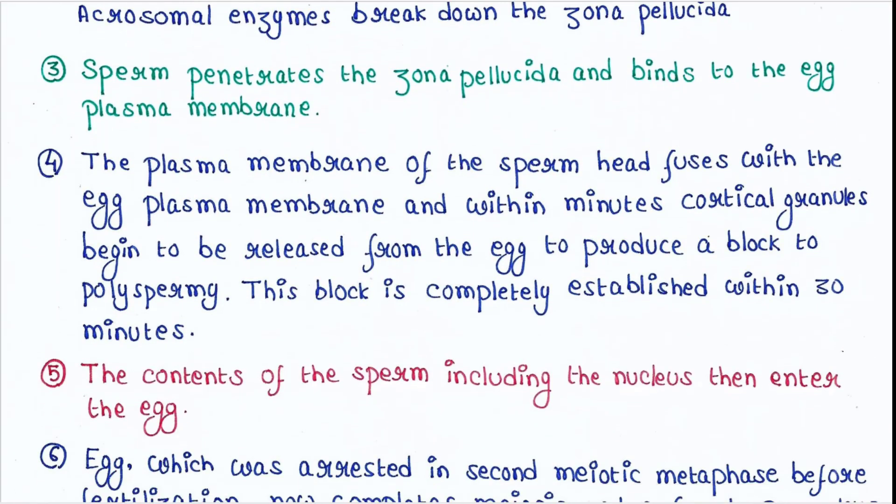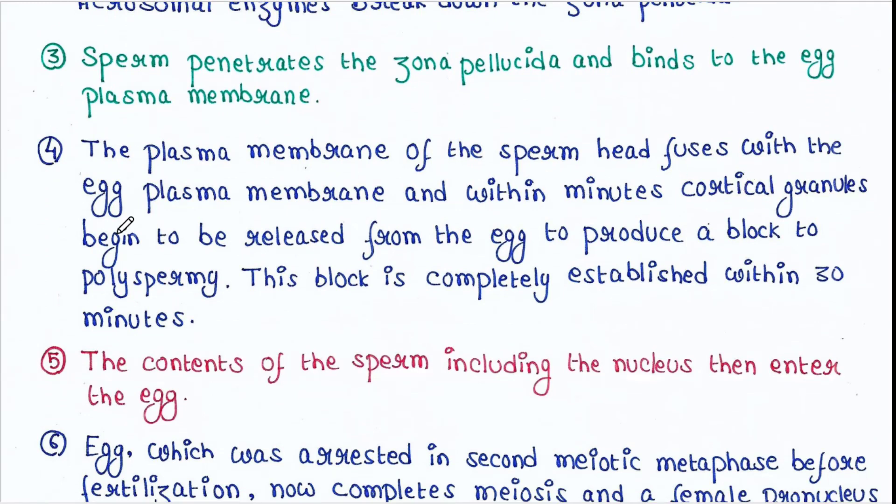The plasma membrane of the sperm fuses with the egg plasma membrane, and within minutes cortical granules begin to be released from the egg to produce a block to polyspermy. This block is completely established within 30 minutes.